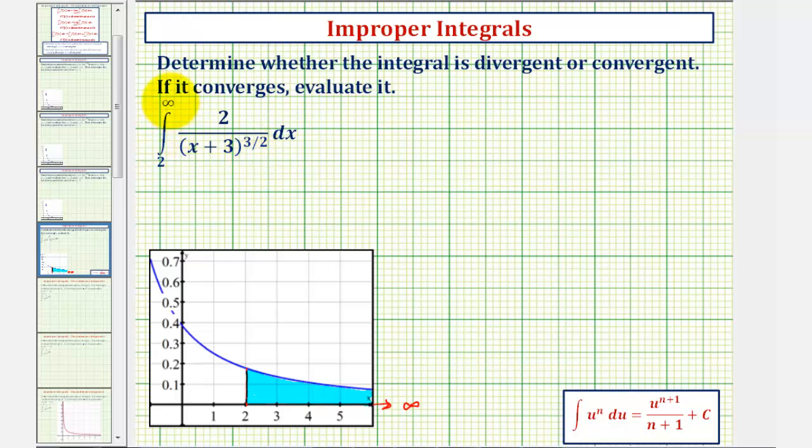We'll take a look at the limits of integration on this integral. Notice how the upper limit of integration is positive infinity, and therefore, the interval of integration is an infinite interval, which is why this is an improper integral.